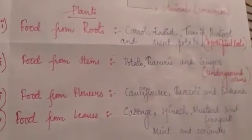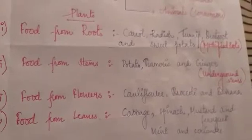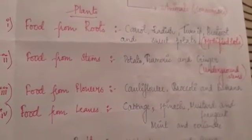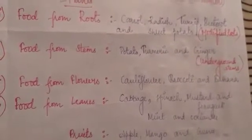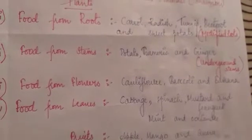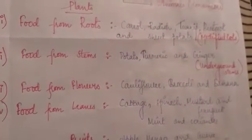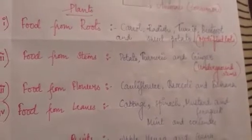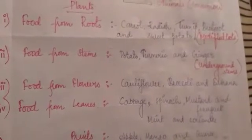Next is food from flowers. Cauliflower, broccoli and banana are plants in which food is stored in the flower. Next comes food from leaves — very familiar examples like spinach, cabbage, mustard and fenugreek store their food in the leaves. Mint and coriander, which are used to make chutney in Indian foods, are also leaf-based foods.